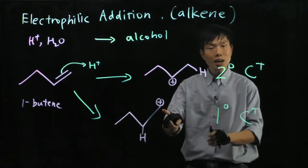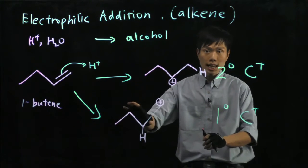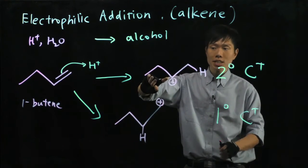Because for this carbon, there's only one R group attached to itself. Whereas for that carbon here, you have two R groups that's connected to it.